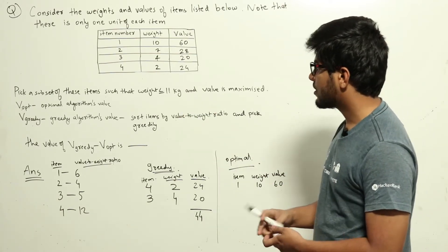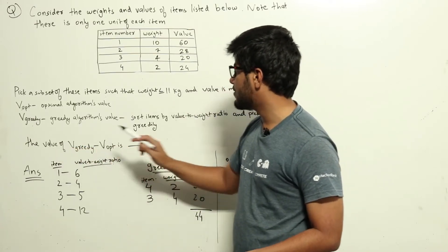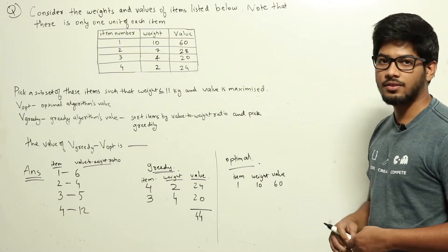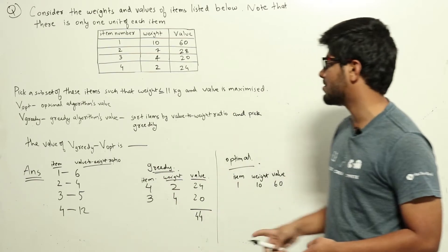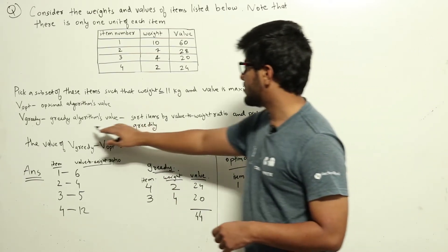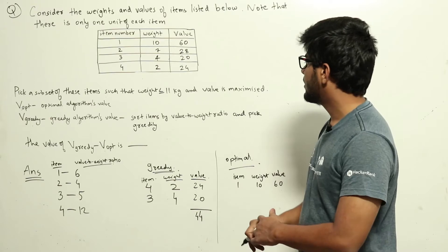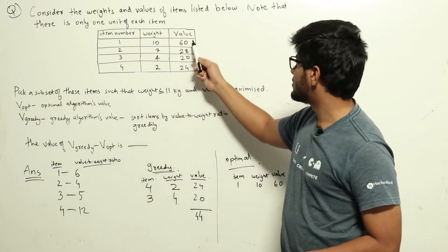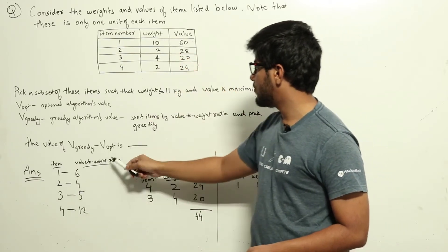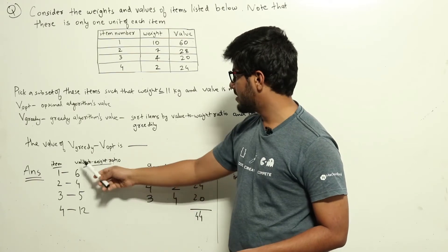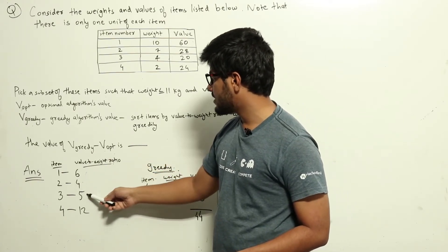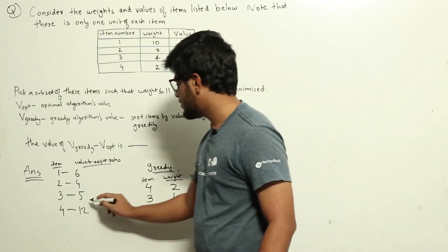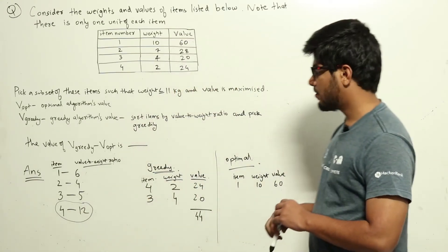Now the question is asking: what is the value of V_greedy minus V_opt? Clearly, V_greedy will be less than or equal to V_opt since the optimal algorithm will give us the maximum possible value. So let us try the greedy algorithm approach. We need to write the value-to-weight ratio of each item. The first one: value is 60, weight is 10, so the ratio is 6. Similarly, dividing the value by the weight, we get the value-to-weight ratios of each of these items.